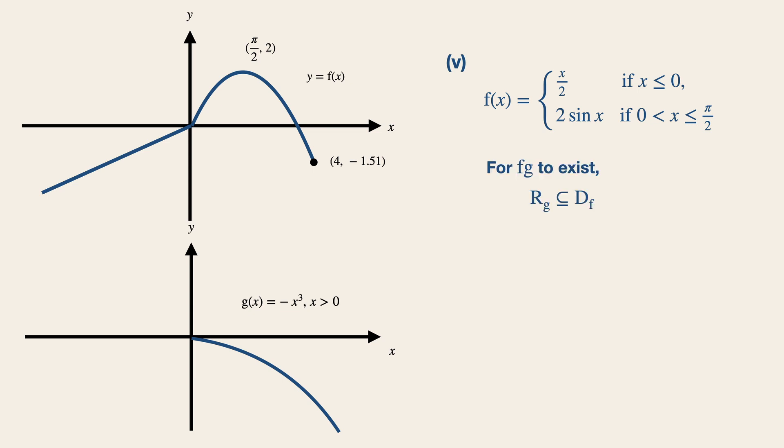In this case, for fg to exist, the range of g must be a subset of the domain of f. So we can see that the range of g over here is negative infinity to 0. This means that we can only substitute g into x over 2 and not 2 sin x because the range of g does not fit into the domain of f. Be very careful over here. Therefore, fg is equals to negative x cubed over 2. Now the question did not specifically ask us to define fg in similar form, so it is okay to leave your answer as such.